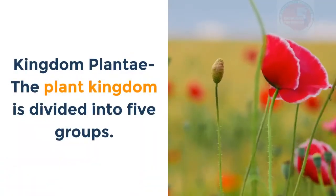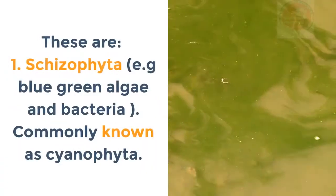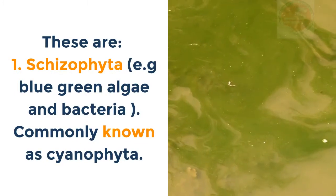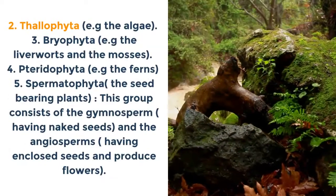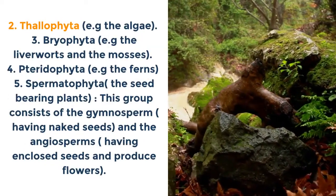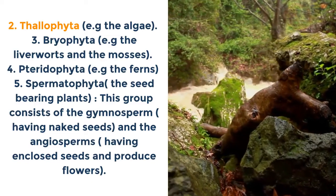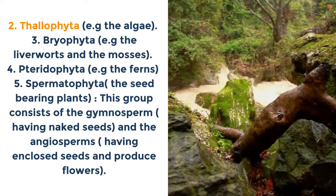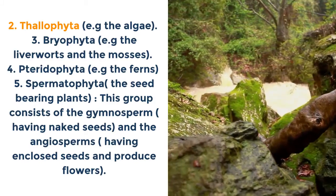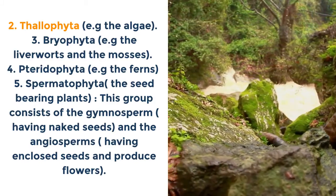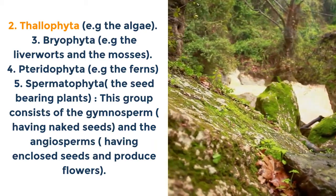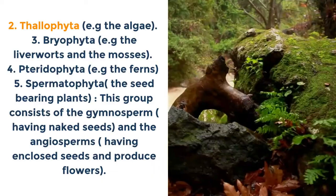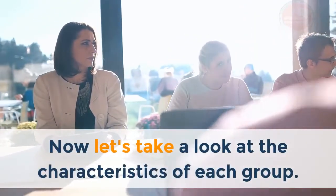Kingdom Plantae: The plant kingdom is divided into five groups. These are: 1. Schizophyta, e.g. blue-green algae and bacteria, commonly known as Cyanophyta. 2. Thallophyta, e.g. the algae. 3. Bryophyta, e.g. the liverworts and mosses. 4. Pteridophyta, e.g. the ferns. 5. Spermatophyta, the seed-bearing plants — consisting of gymnosperms with naked seeds and angiosperms with enclosed seeds that produce flowers. Now let's look at the characteristics of each group.